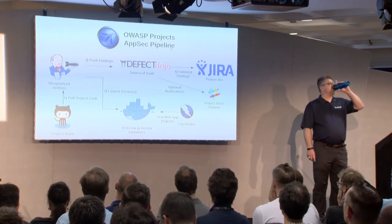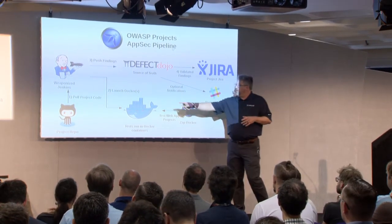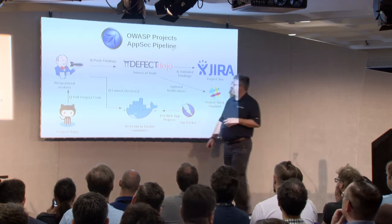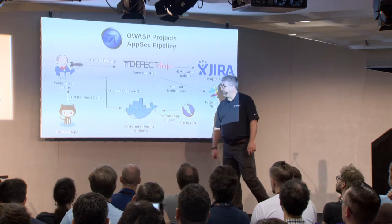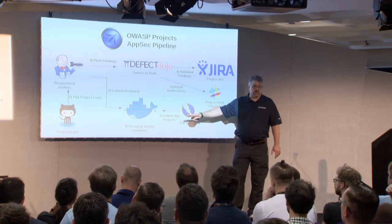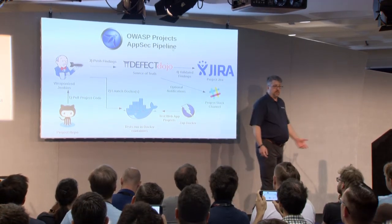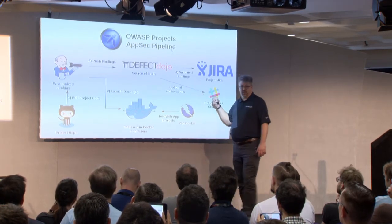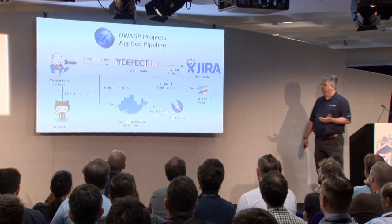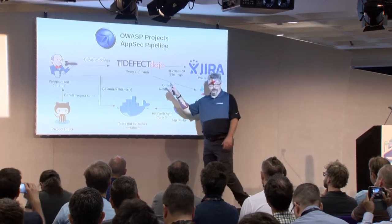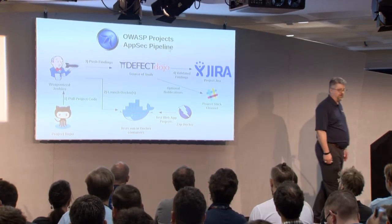One of the things I want to do at OWASP is set up a pipeline to look at our own projects. The idea is: you pull from a GitHub repo into a workflow — in this case Jenkins. You launch Docker containers that are pre-configured with security tools. For example, you might run ZapDocker against a test app, get the results, feed those into DefectDojo, optionally shunt some things to a Slack channel for that project, and push results into Jira. There's glue code that has to happen, but you only have to do it once — you make the Docker that launches Zap one time and then you can launch it against anything.